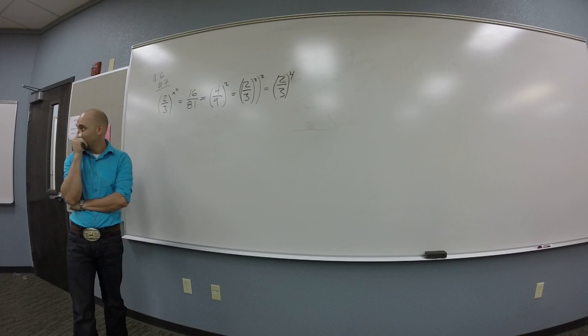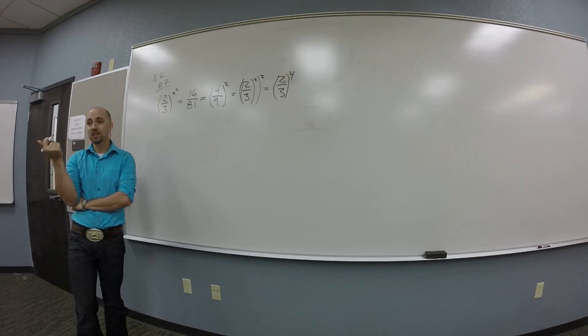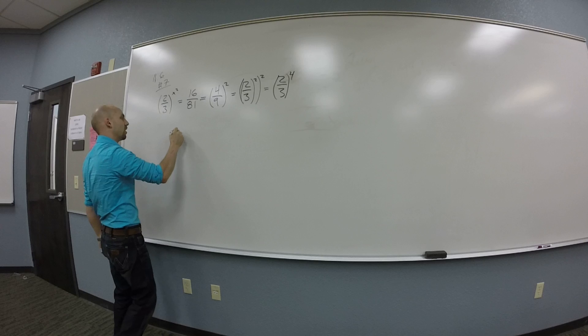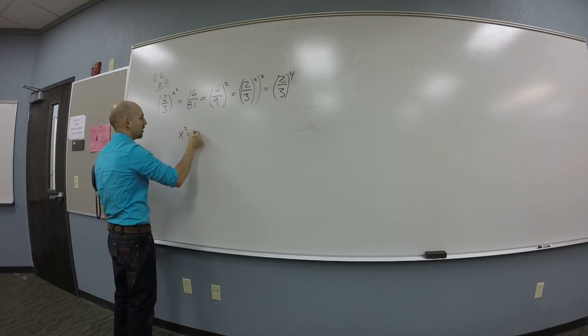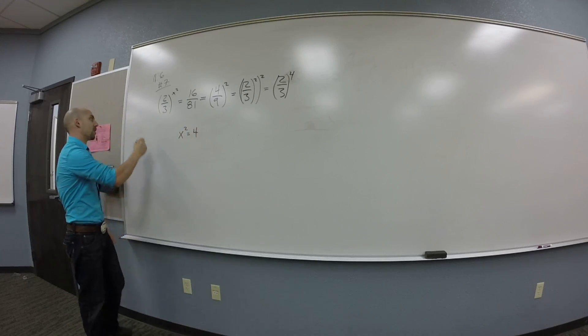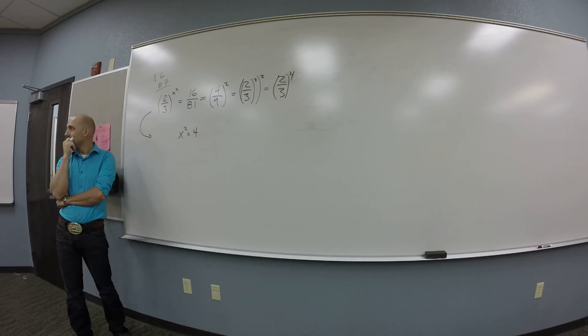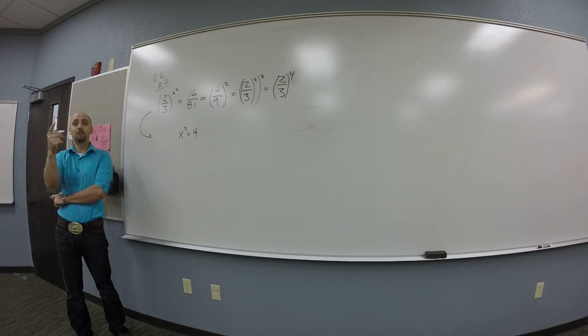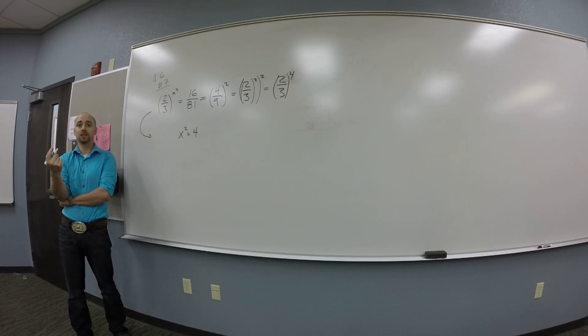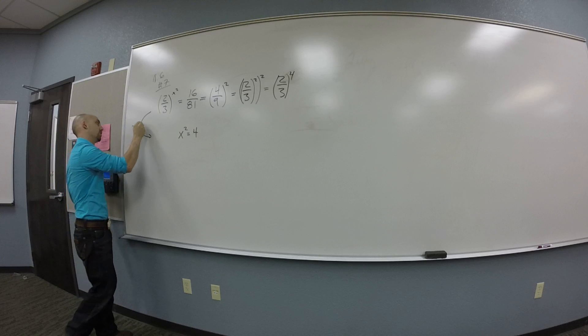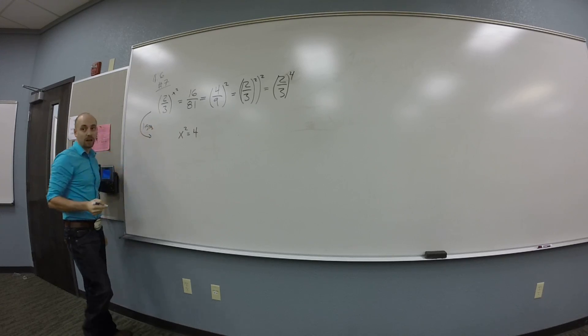But now that I've got things in this form, what could I say? Bases are the same. The x squared is equal to 4. Yeah, the bases are the same. So this says x squared has to be 4. If I wanted to think about a step that takes me from here to here, what is it? What's that function? Logging.